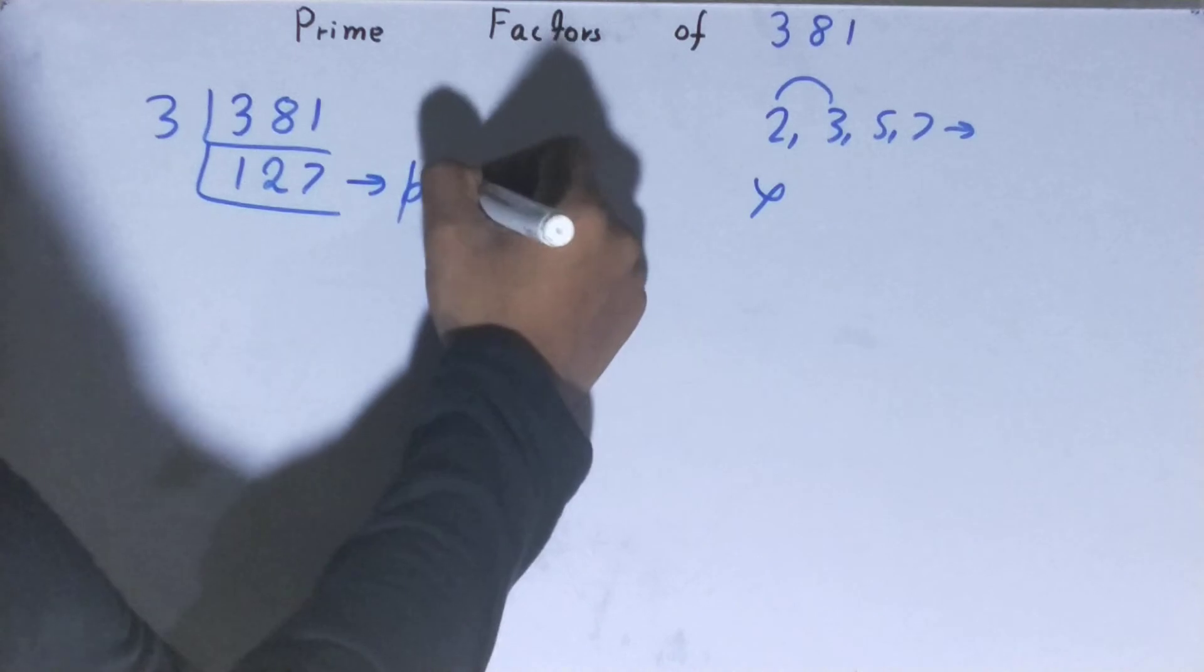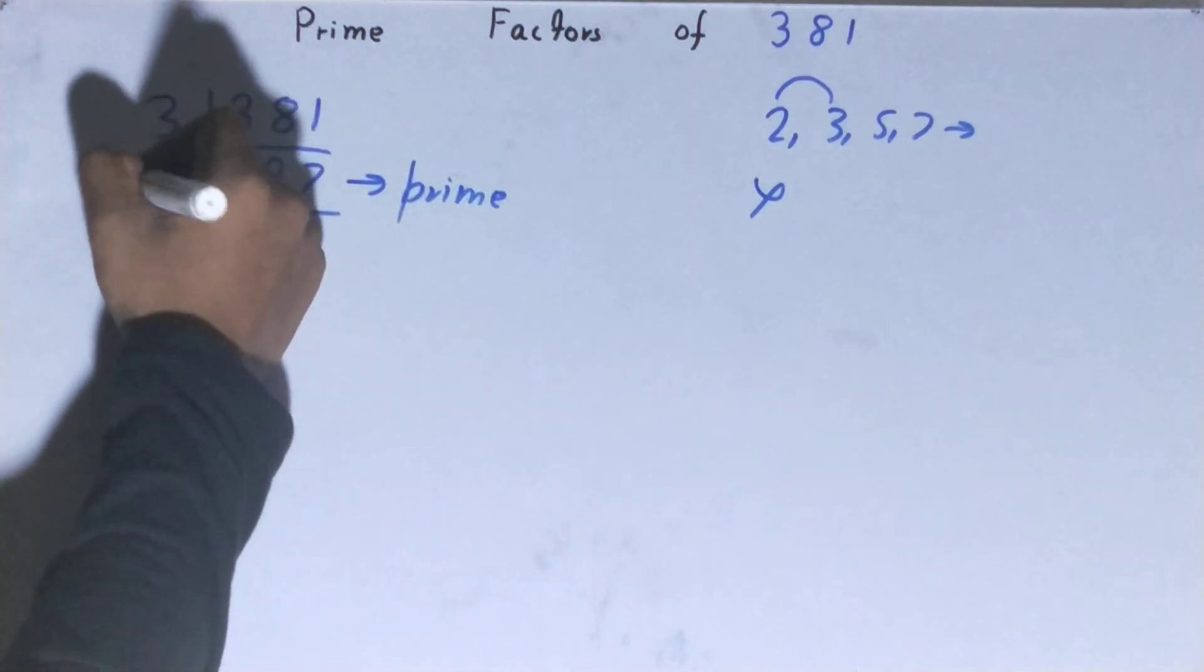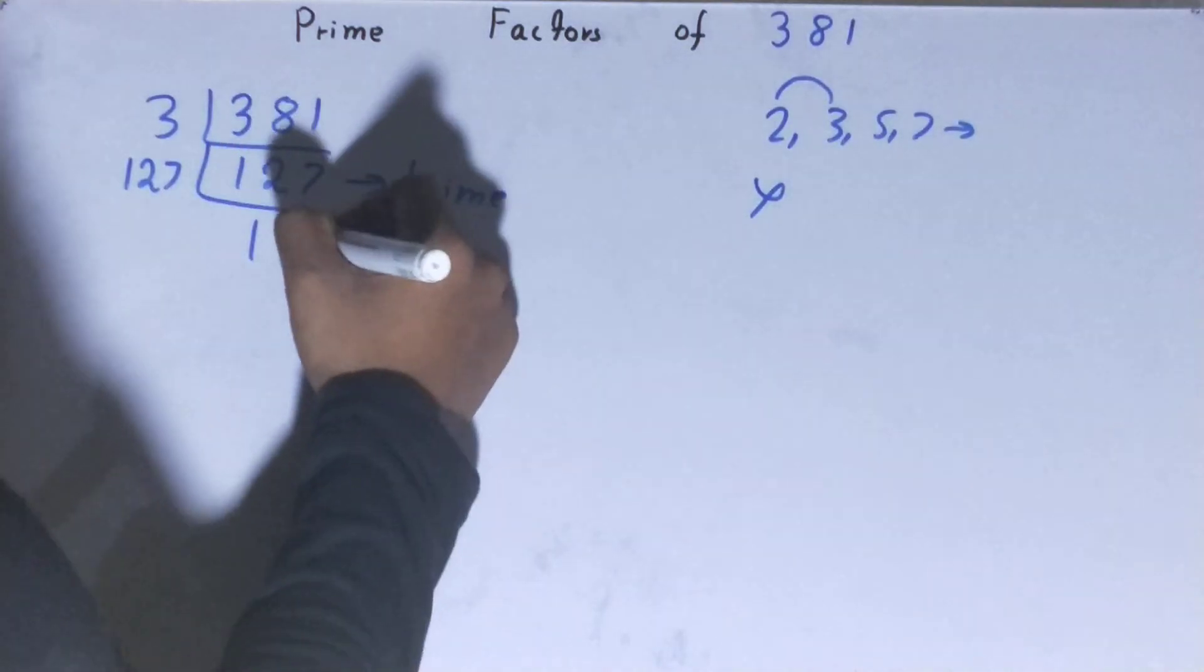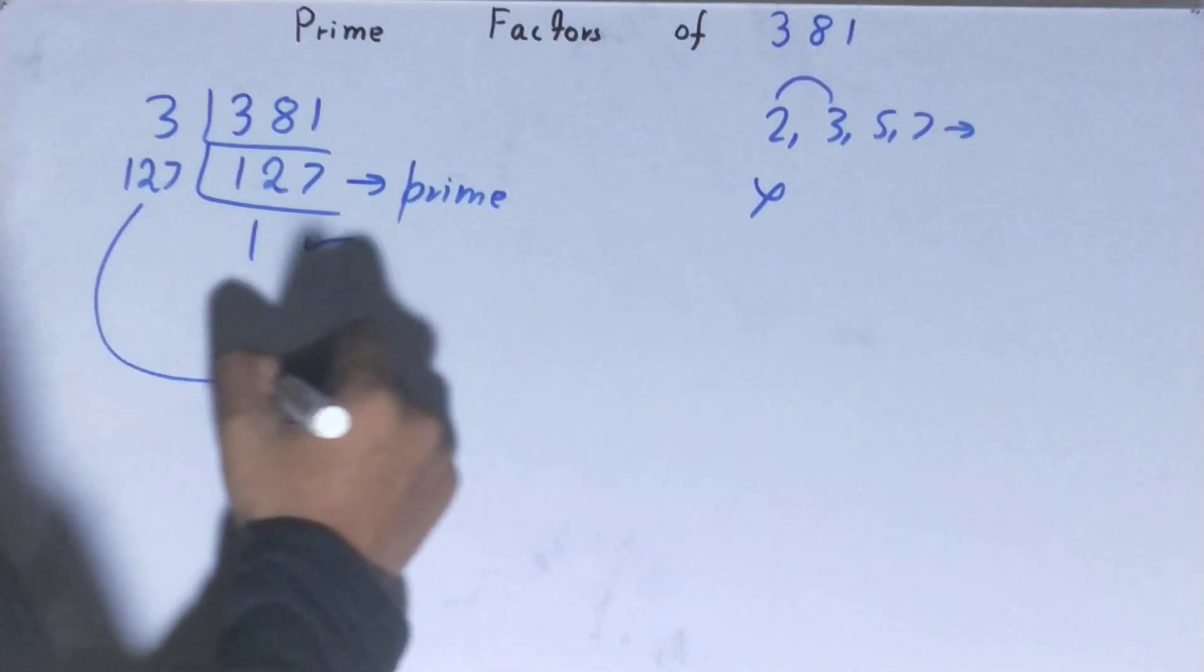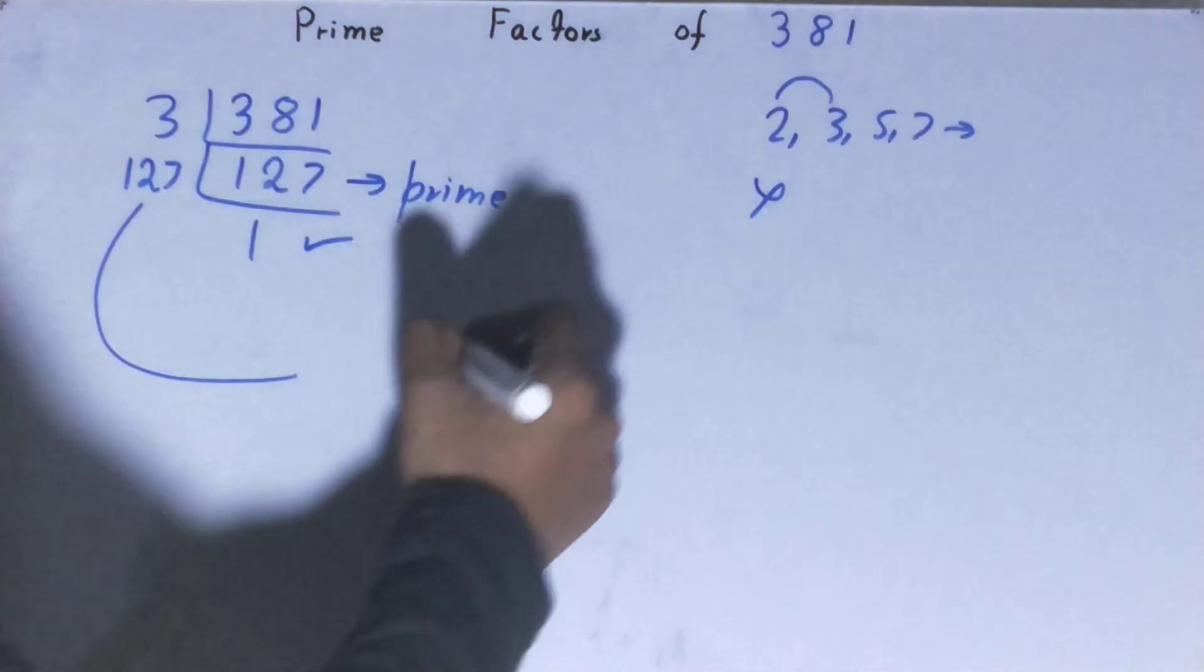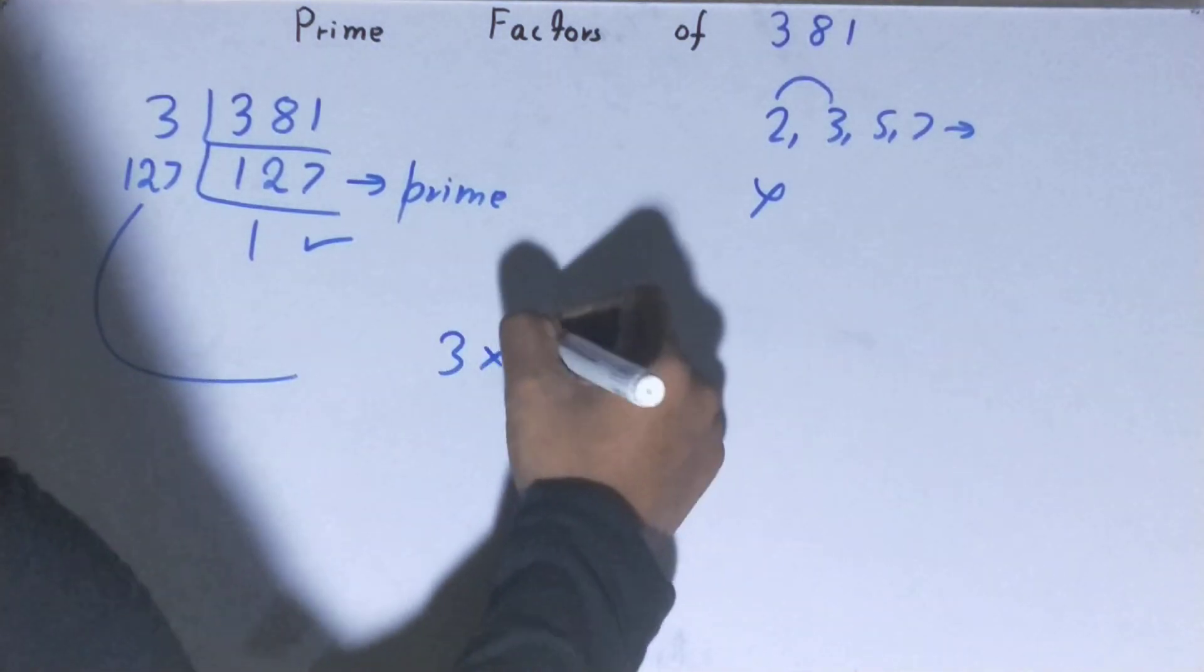To divide this 127, you need 127 on the left-hand side, and when you do so, you'll be left with 1. Once you're left with 1, the work is done and whatever you have on the left-hand side will be the prime factors of the number 381, that is 3 × 127.